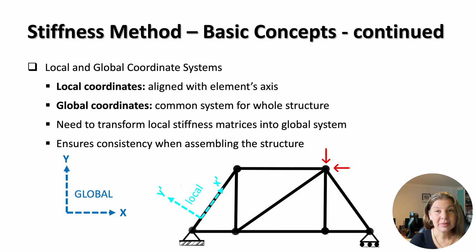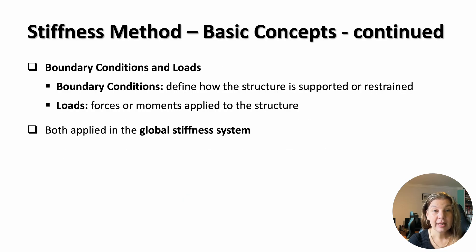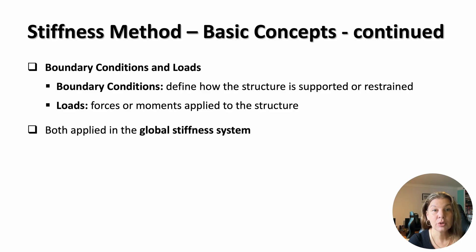Don't worry if any of these concepts seem difficult — we'll cover them all in great detail as we go through the lectures. The last fundamental concepts before we move on to the procedure are boundary conditions and applied loads. Boundary conditions describe how the structure is supported or restrained — for example, whether a point is fixed, pinned, or free to move. Applied loads are the forces or moments acting on the structure. In the stiffness method, both boundary conditions and loads are incorporated into the global system, and are essential for accurately predicting the structural response.